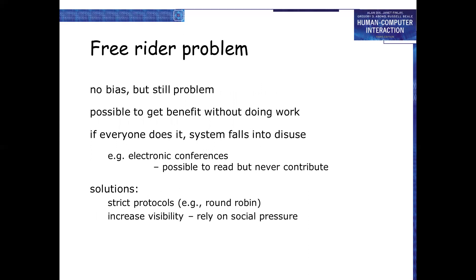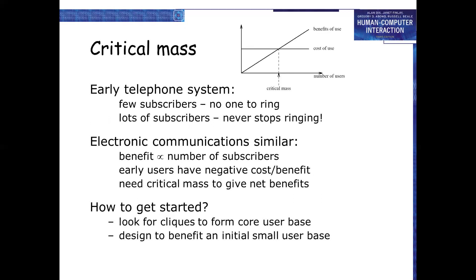The result is the system falls into disuse. Solution: coerce use, design for symmetry, or free-data entry with no bias — but there is still a problem: it is possible to get benefit without doing work. If everyone does this, the system falls into disuse. Example: electronic conferences — possible to read but never contribute. Solution: switch protocols, use round-robin to increase visibility, and rely on social pressure.